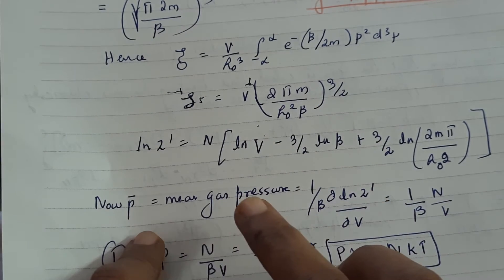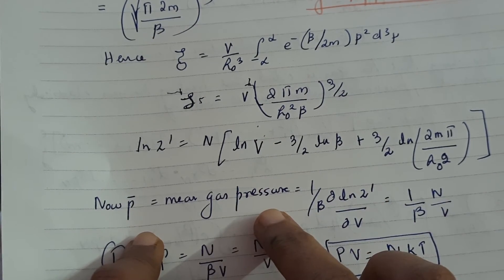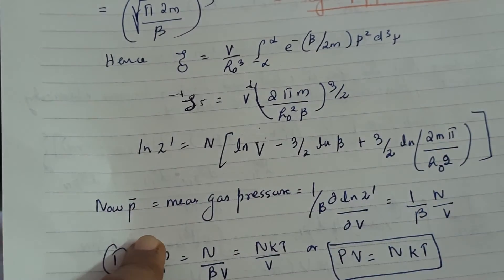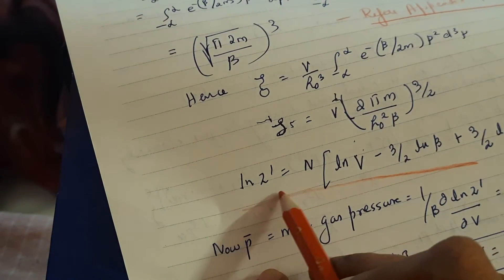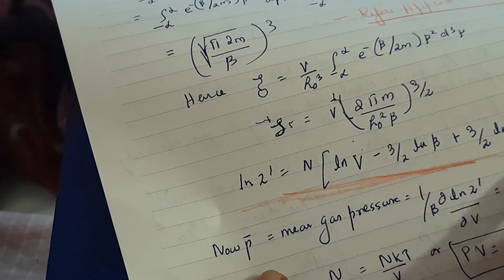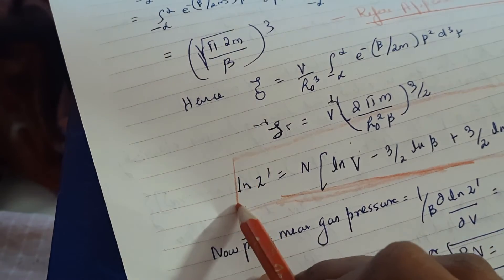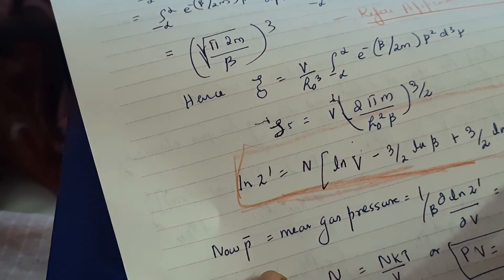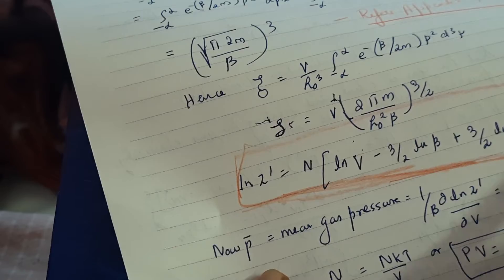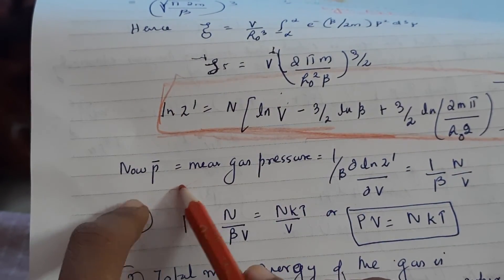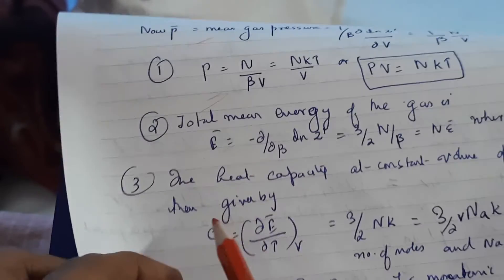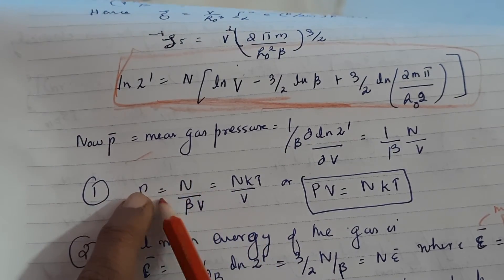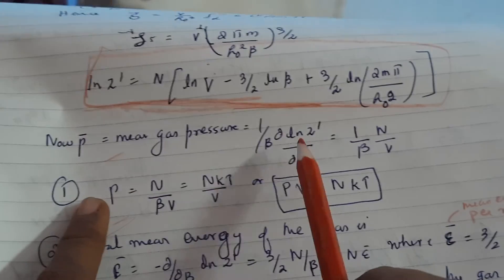Now, as mentioned before, we are going to calculate the thermodynamic quantities. We have already found the partition function for a monatomic gas — this is our most important formula, so put a box around it. Now we are going to find pressure, then mean energy, then heat capacity, and then entropy. Just substitute into the mean gas pressure formula using the generalized force, which we derived in previous lectures.